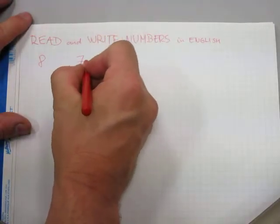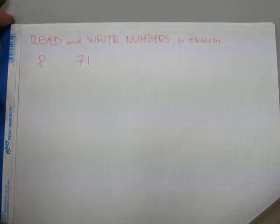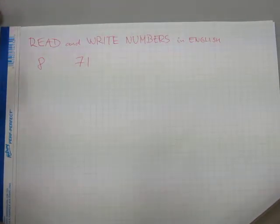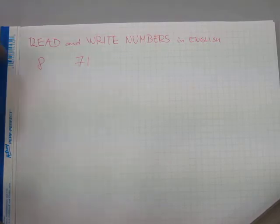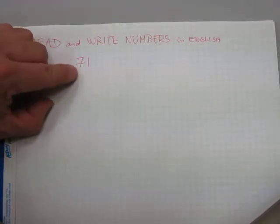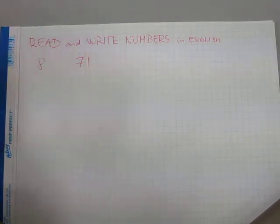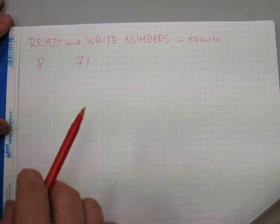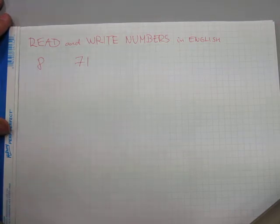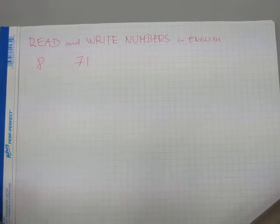Two-digit numbers follow the same principle. In the number 71, both digits are read together. The word 70 is indicating the place value of the 7 — that it's a multiple of 10 — so you read 71. There are no additional words that get read, and nothing extra gets written down.